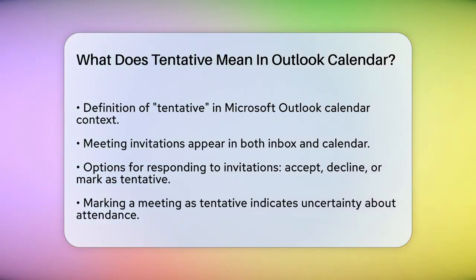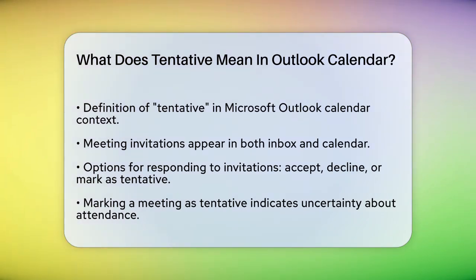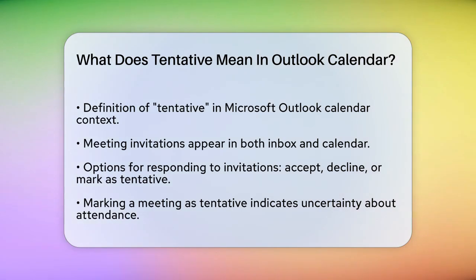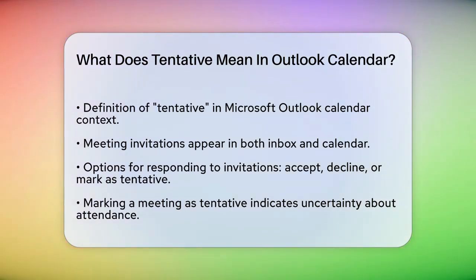When you receive a meeting invitation in Outlook, it typically appears in your inbox as an email and also shows up in your calendar. You have several options to respond to this invitation — you can accept, decline, or mark it as tentative.